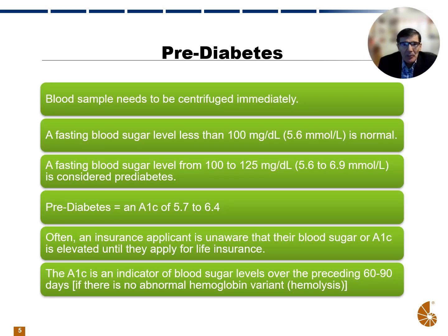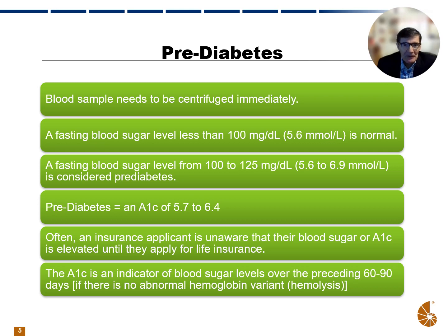So what happens in pre-diabetes? When we draw a blood sample, it needs to be centrifuged immediately. Otherwise, the sugar level actually drops in the blood sample because of the red cells consuming the sugar. We want to make sure that when a blood sample is drawn, it's centrifuged immediately. The longer it sits without being centrifuged, the lower the glucose level may be just from the blood sitting. So if somebody had an elevated blood sugar in their body but the blood sample was left to sit for hours, the blood sugar level may actually appear low — not due to anything but the sample not having been centrifuged immediately.